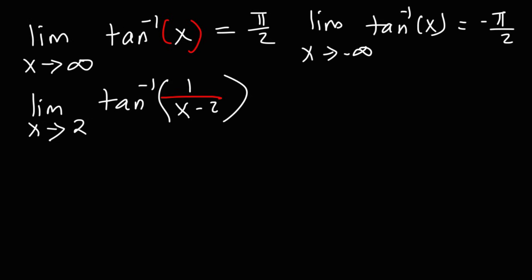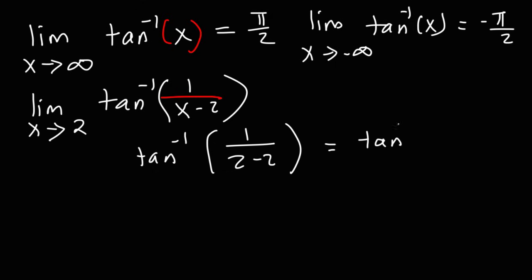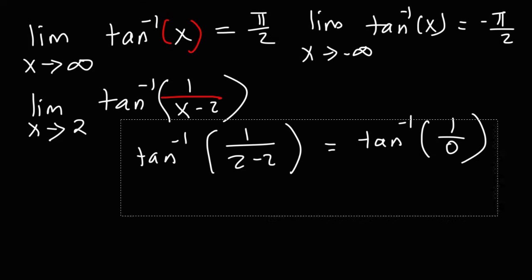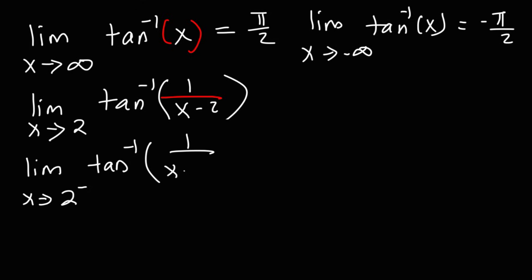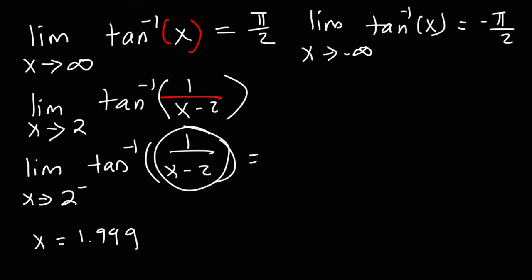We can't use direct substitution because we'd get arctangent of 1 over 2 minus 2, giving a 0 in the denominator, which is undefined. So we need to break it into one-sided limits. When x approaches 2 from the left, imagine x is 1.999. Then 1 divided by 1.999 minus 2 gives negative 1,000 — a very large negative number. This tells us 1 over x minus 2 approaches negative infinity, so we have arctangent of negative infinity, which equals negative pi over 2.